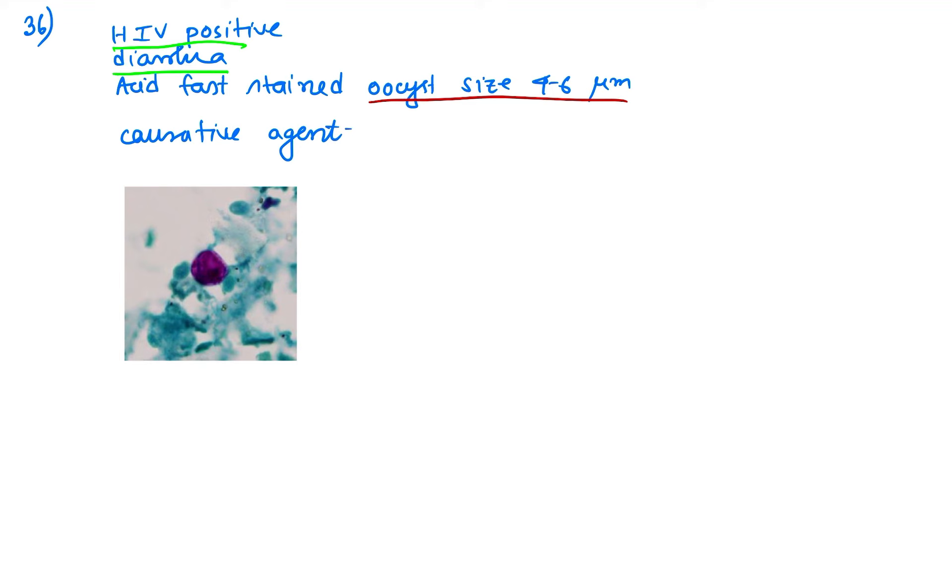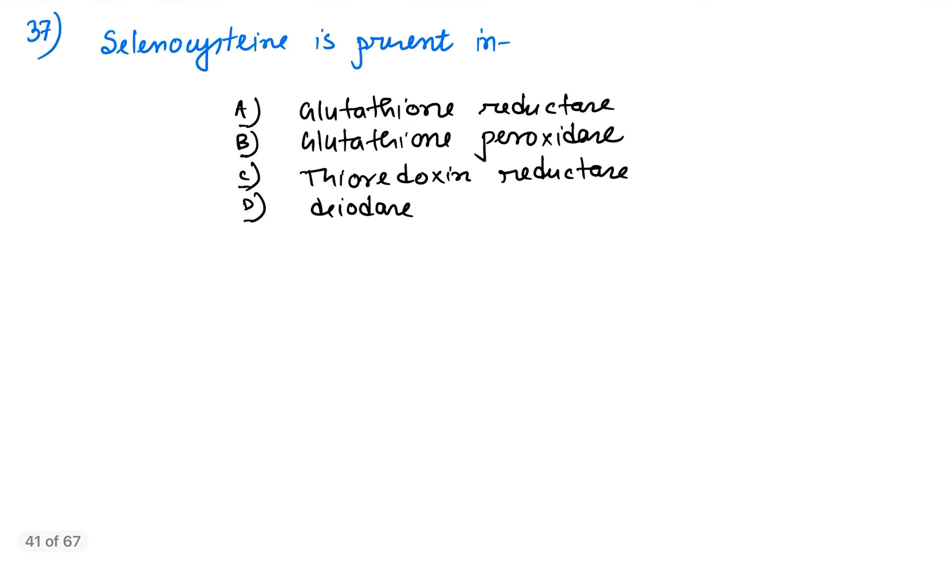Next, question number 37: selenocysteine is present in which enzyme? Glutathione reductase - yes it is. Glutathione peroxidase - it is. Selenocysteine is also a component of thyroxine reductase - yes. And deiodinase. So the answer is all four options are correct - selenocysteine is a component of all four enzymes.